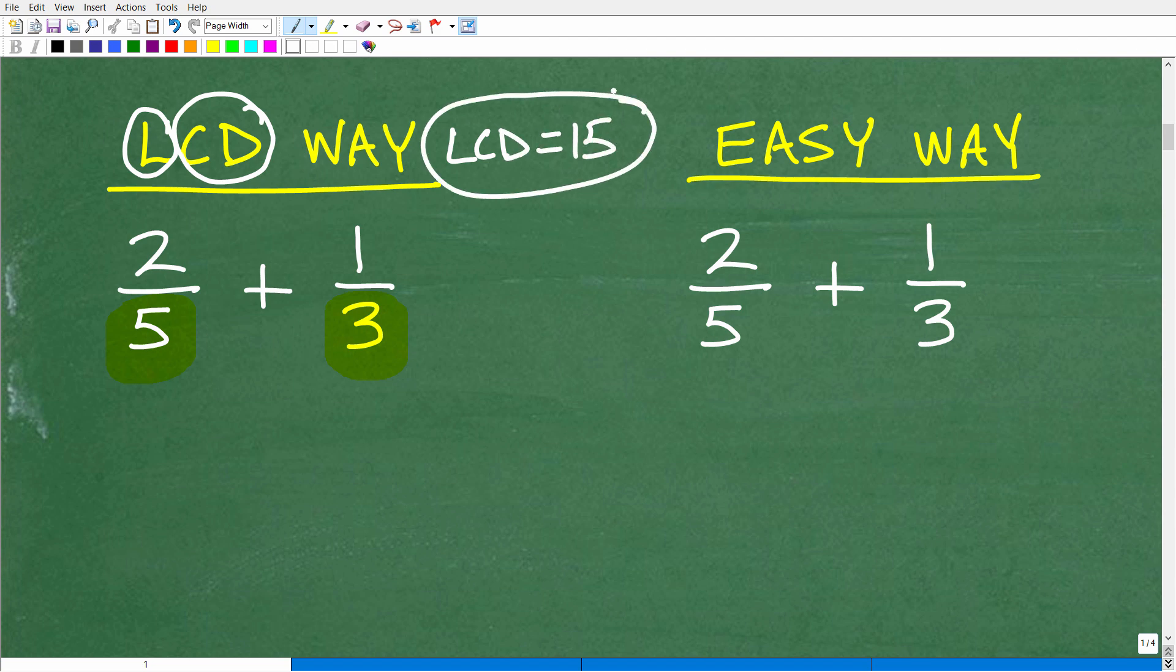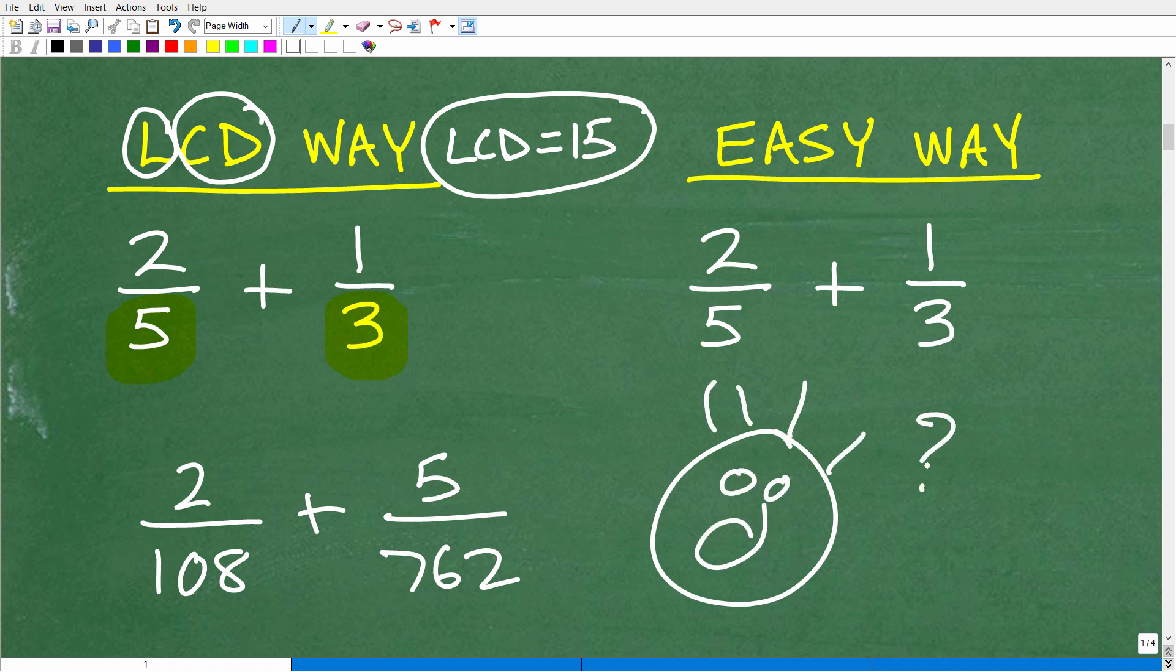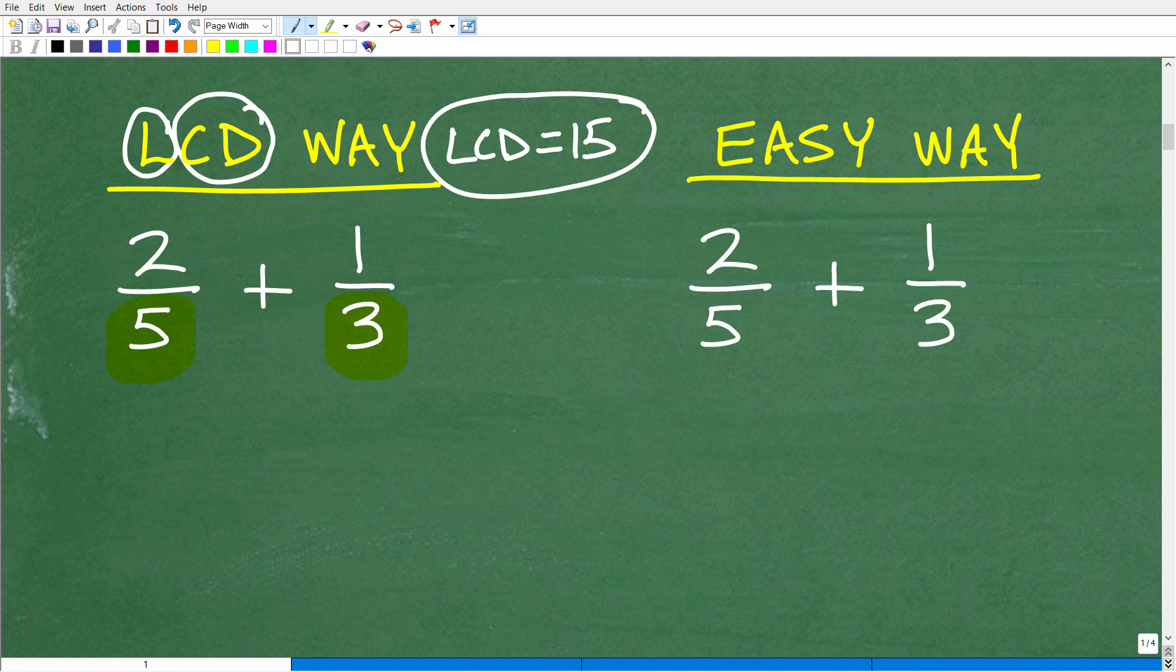Now, again, if you're confused about the LCD, that's a separate individual topic in and of itself. And you definitely want to learn how to find the LCD when you have various different denominators. Now, real quick, these denominators are very easy to determine the LCD. So a lot of you might be overconfident. Like, I know how to find the LCD. But if I gave you something like this, I don't know, 108 plus 5 over 762, and I said, what is the LCD? A lot of you may have this kind of expression on your face. You're like, I don't know how to do that problem or it would be very difficult. So, again, this technique I'm going to show you here in a second will help you bypass having to deal with an LCD that's larger. But, again, you need to know how to find the LCD.